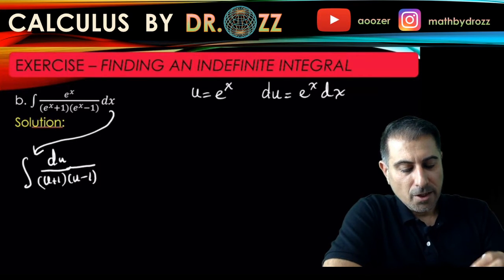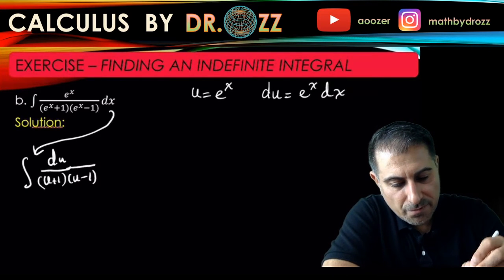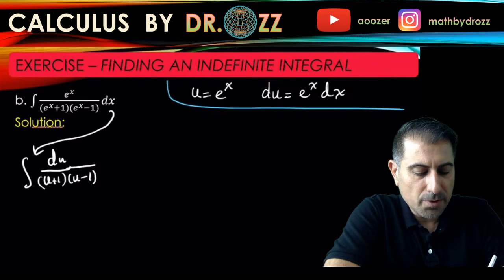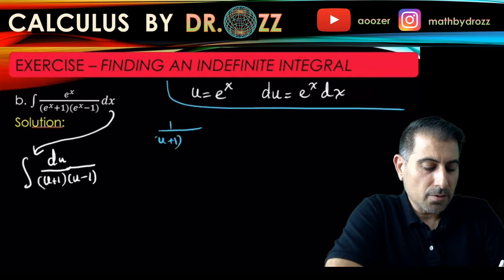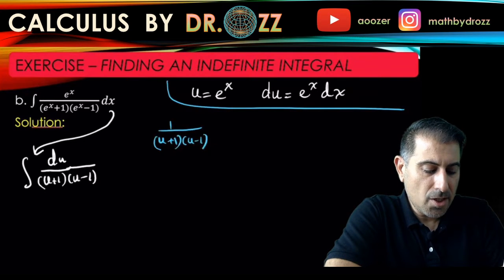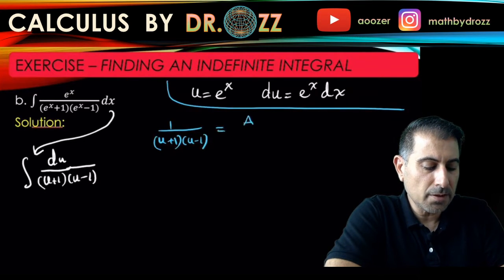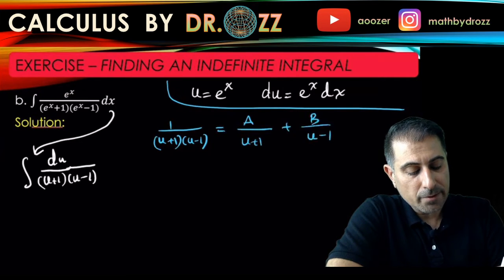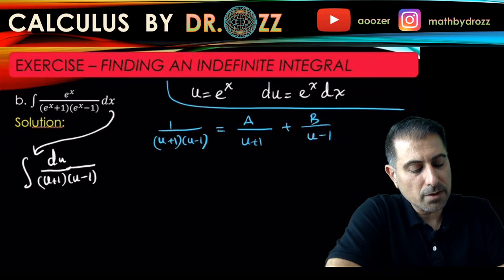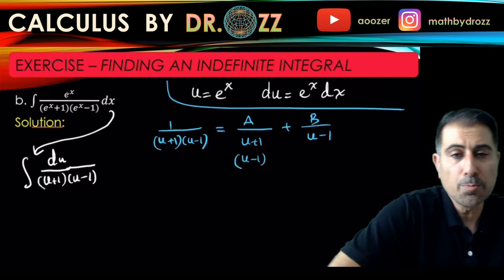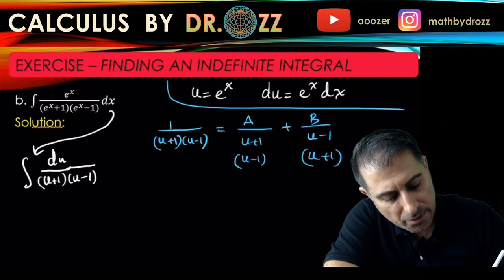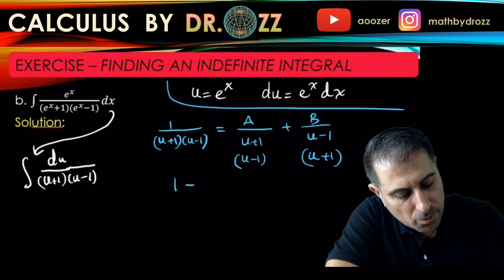The factors are linear, so I'm gonna do this. I have 1 over (u+1)(u-1), so I'm gonna have an A here for u+1 and B here for u-1. I'm gonna find a common denominator, u-1 for this and u+1 for the second fraction.